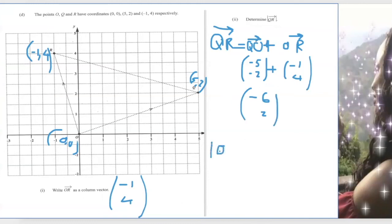To find the length of this QR vector, it's going to be the square root of negative 6 squared plus 2 squared. Square the negative becomes positive, so I have 36 plus 4. So that is root 40 units. So the length is square root of 40 units.